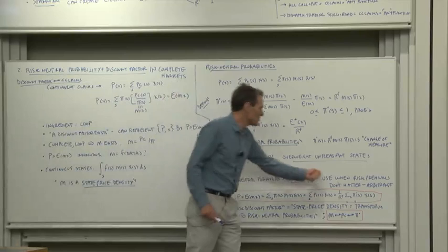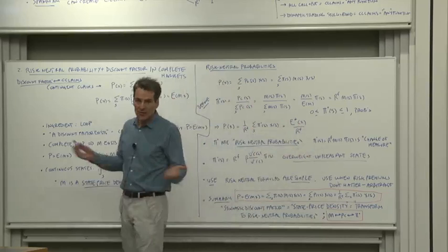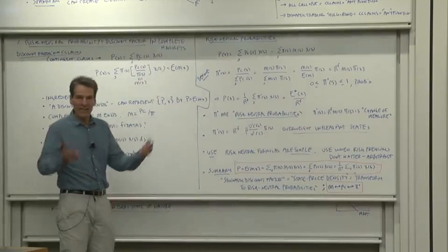When do we use risk neutral probabilities? Well, the formulas are really simple. So they're very useful when the risk premiums, when the actual probabilities, don't matter that much, if you're pricing options by arbitrage, for example.